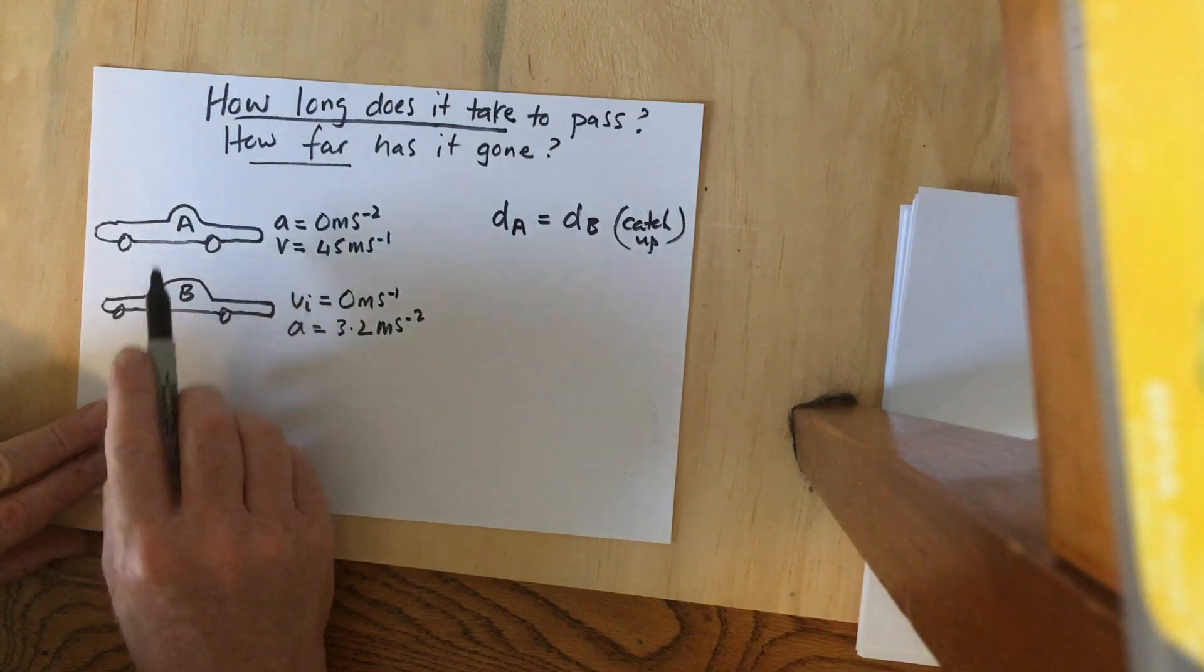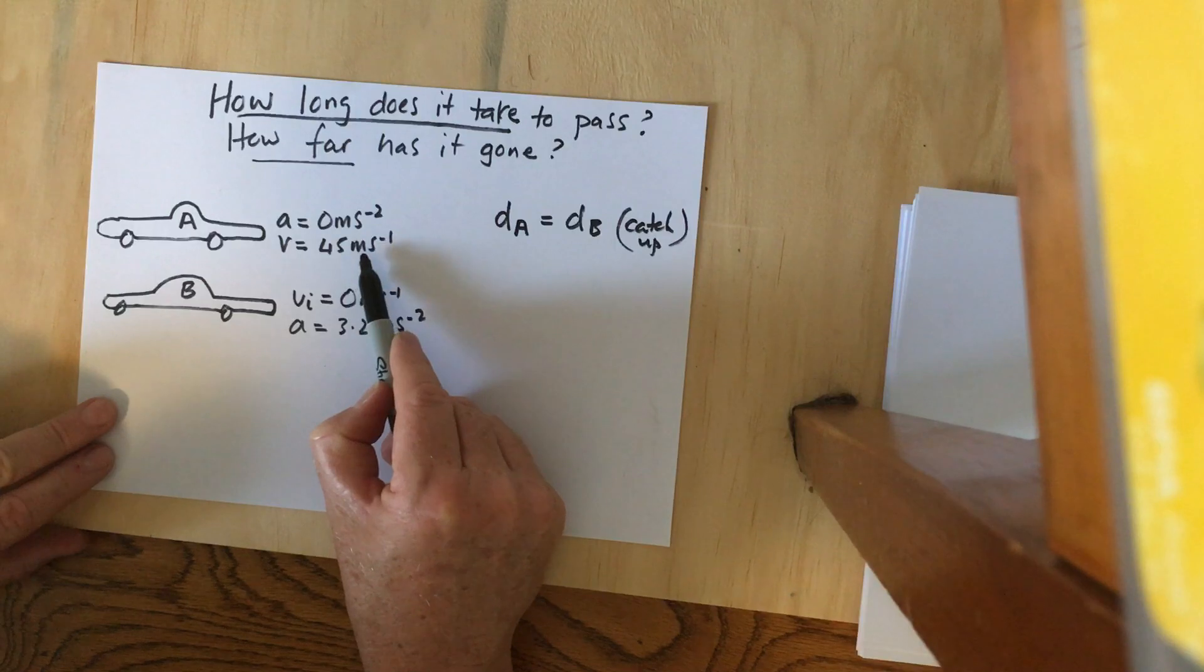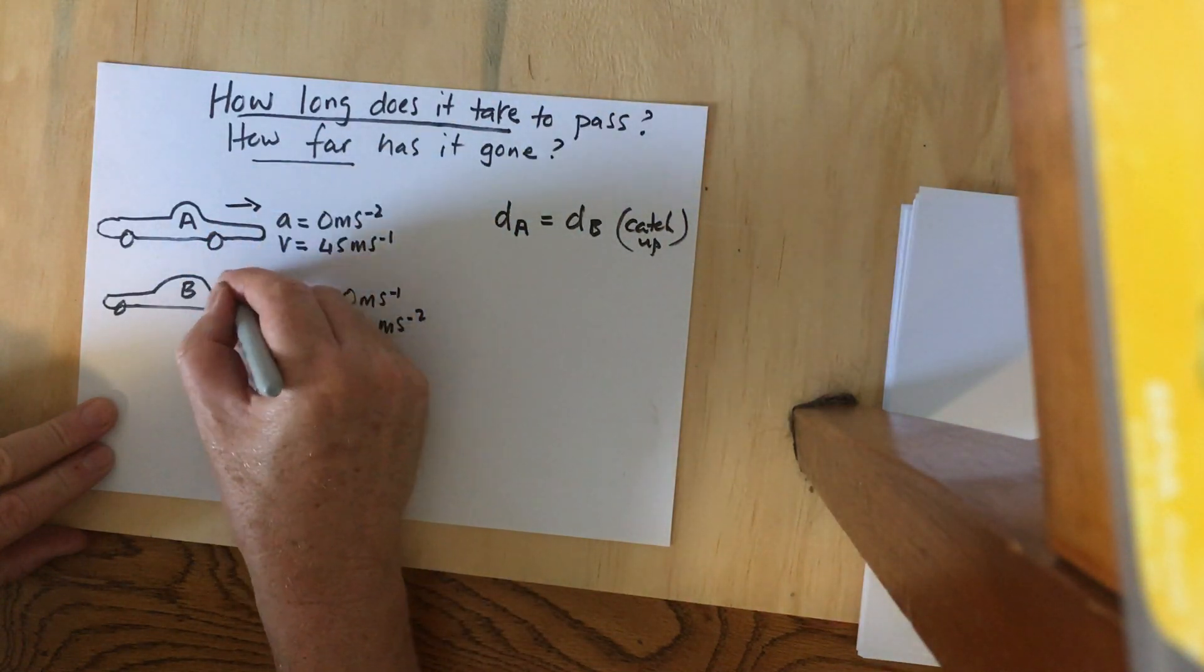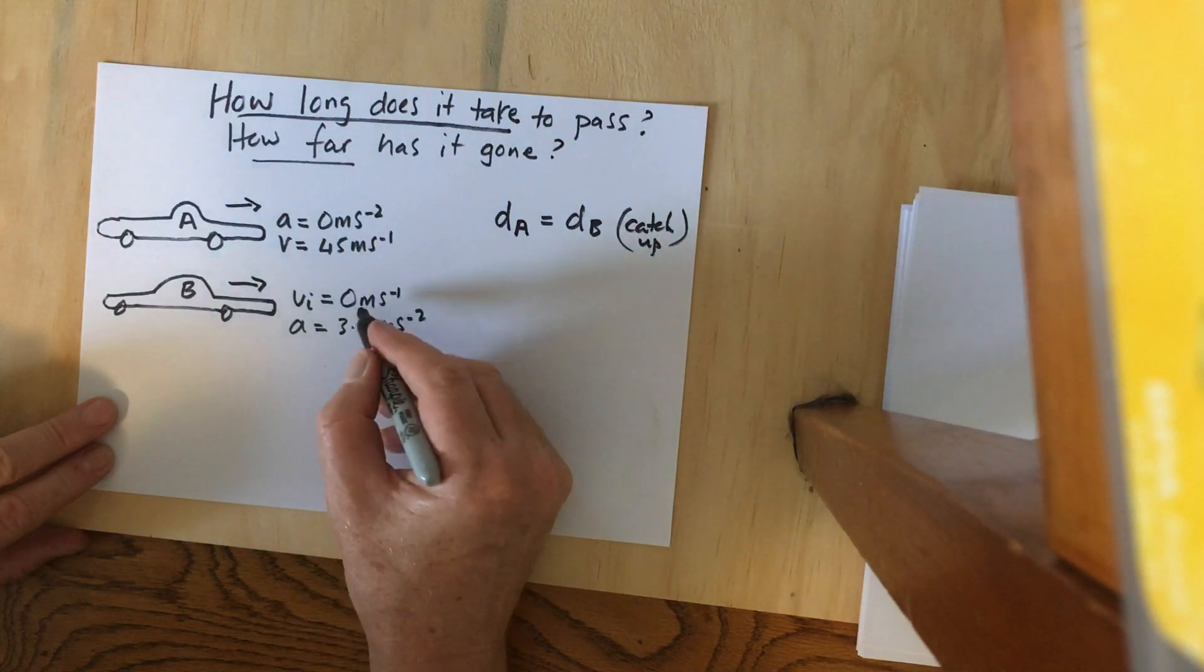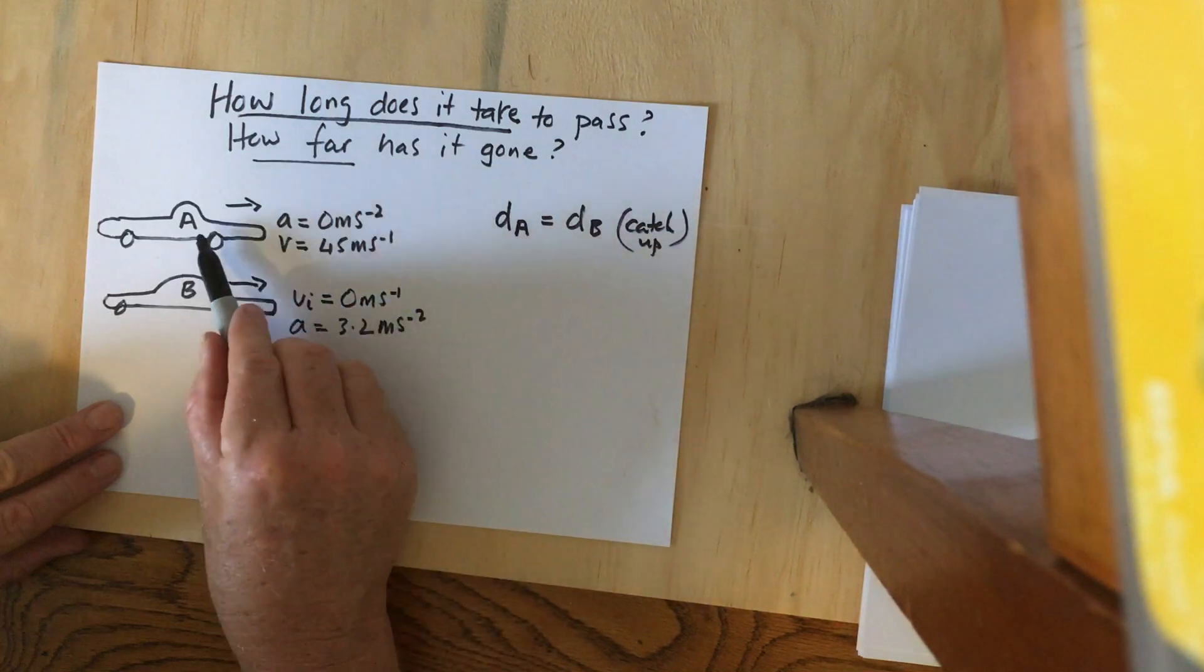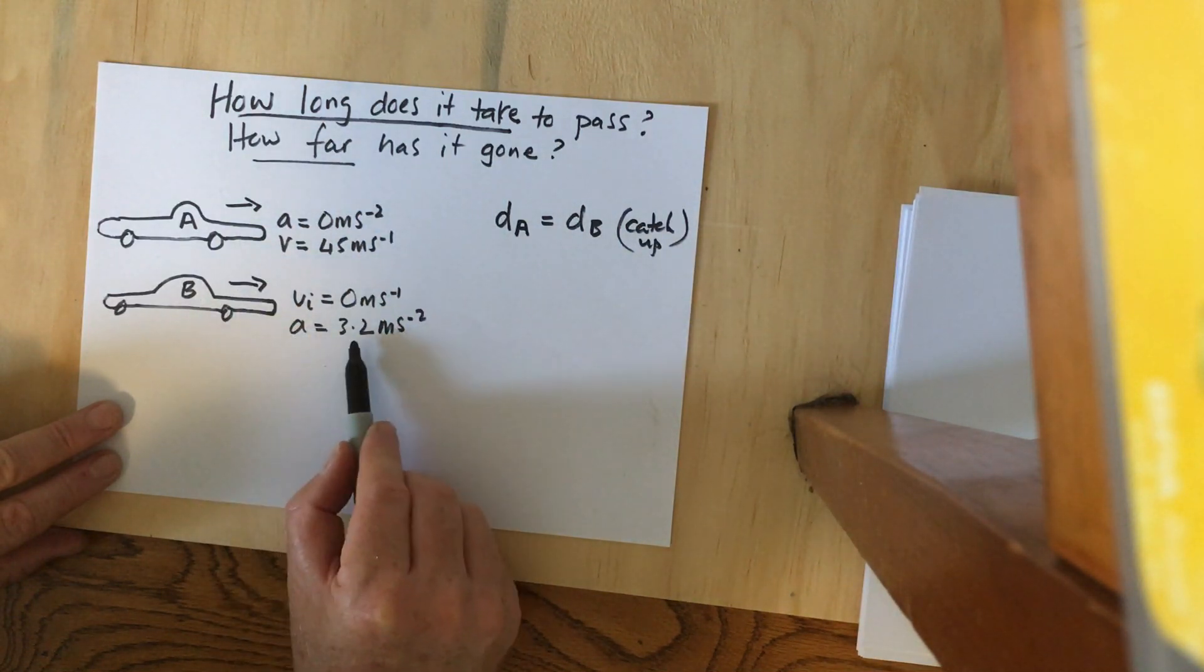Let's look at the data. Car A is at 45 meters per second, and Car B is at 0 meters per second—that's its initial velocity. Car A has no acceleration, but Car B is accelerating.